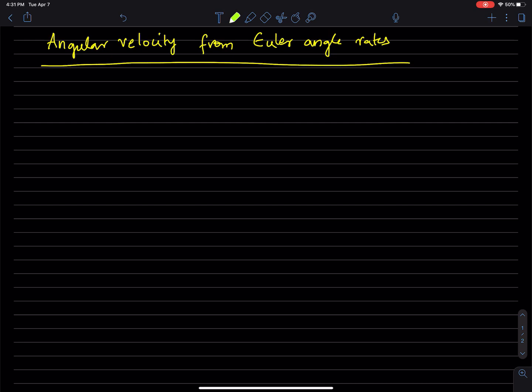So let's say we are using x, y, z Euler angles, alpha, beta, gamma in that sequence. First a rotation about x, then a rotation about y, then a rotation about z with these three angles respectively.